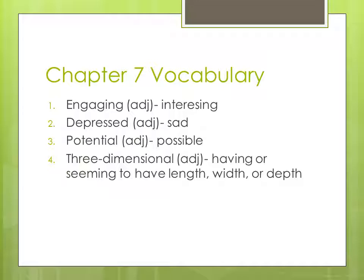The next word is three-dimensional. It is an adjective, and it means having or seeming to have length, width, or depth. It just means that things have more than one dimension. A piece of paper is two-dimensional — it doesn't have any depth. But if you look at a desk, a table, a chair, or a book, it all has length, width, and depth together.